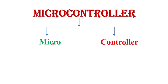Microcontroller is basically a combination of two words: micro and controller. Micro means small in size — micro is also a unit of measurement, like micro and nano. Controller is a device that controls all the operations of a system. So a microcontroller is a device that is very small in size and controls the operation of other devices.